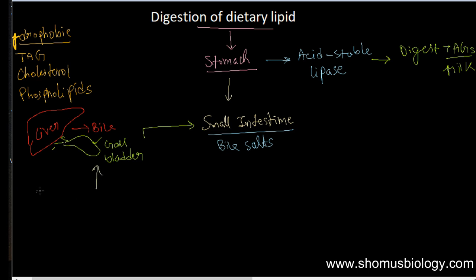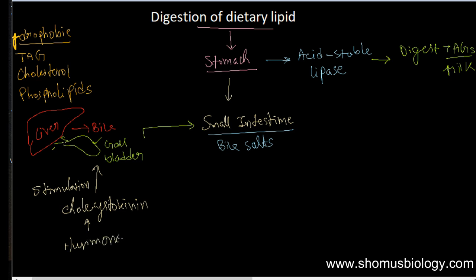The release of bile from the gallbladder is stimulated by cholecystokinin, which is regulated by hormones. Cholecystokinin stimulates the release of bile salts from the gallbladder, and that bile salt is released into the small intestine where gastric motility continues.